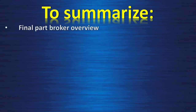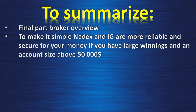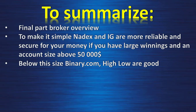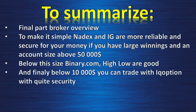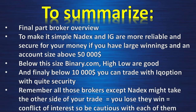Final part: broker overview. To make it simple, Nadex and IG are more reliable and secure for your money if you have large winnings and an account size above $50,000. Below this size, Binary.com and High Low are good. And finally, below $10,000 you can trade with IQ Option with quite good security. Remember, all those brokers except Nadex might take the other side of your trade — so you lose, they win — equal to a conflict of interest, so be cautious with each of them.